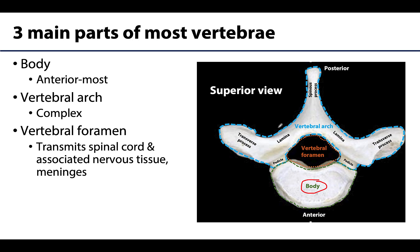The vertebral arch is this whole area outlined here in light blue, and as you can see it's a bit more complex with lots of processes and facets, and we will come back to this in the next slide. All vertebrae will have this vertebral foramen, and it will be various sizes depending on what level you're at, but they're going to contain the spinal cord and the roots of the spinal nerves along with the meninges and associated neurovasculature. So an extremely important area.